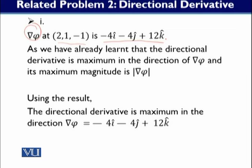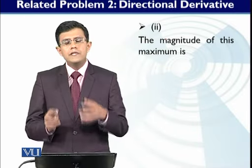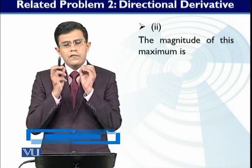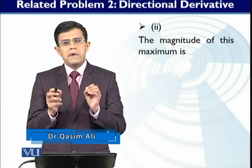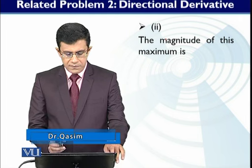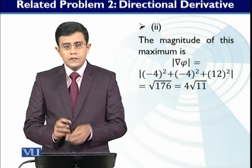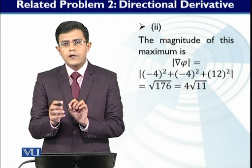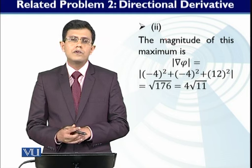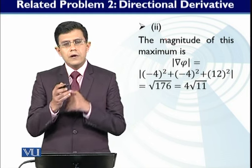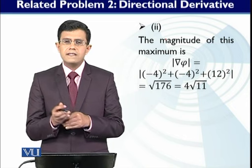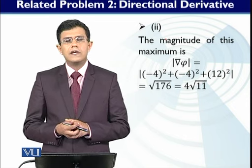For part 2, we need to find the magnitude. Since we know from the theorem that the magnitude of del phi equals the maximum value of the directional derivative, we compute |del phi| at the given point, which gives 4√11. So using the theorem, you have handled both parts of the problem very easily. This is the end of this example. Thank you very much.